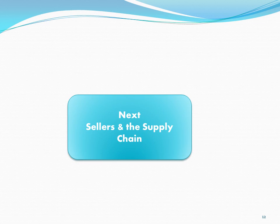Now we have a discussion of supply and demand in markets and have looked in some detail at the demand side of the market, showing how buyers behave. Next we're going to look at the supply side of the market and the production and supply of products into the market. I'll see you at the next lecture. Thank you.